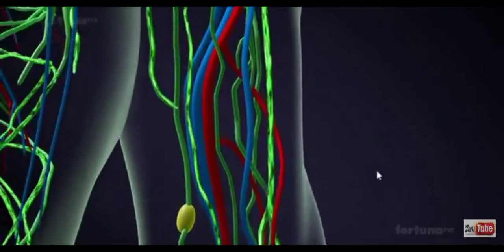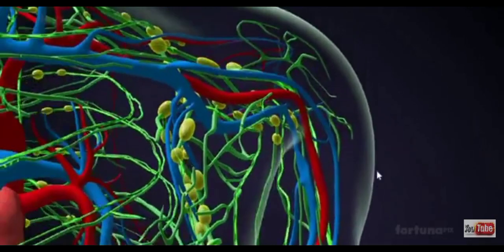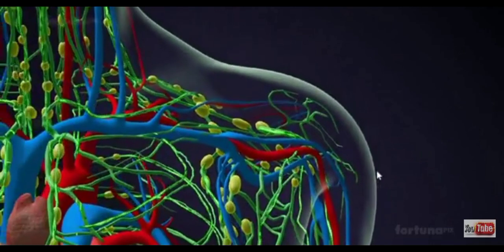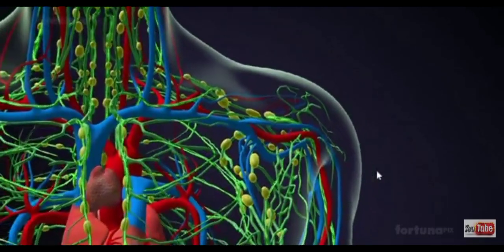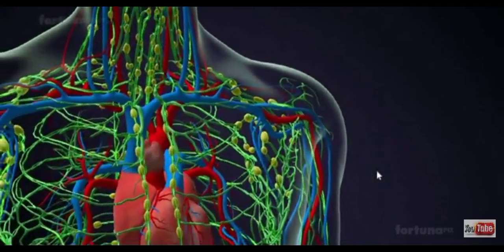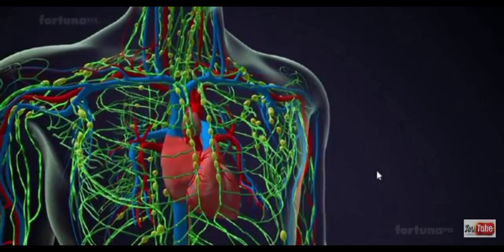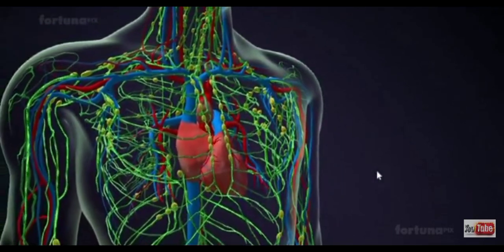Lymphatic capillaries unite to form collecting vessels, which move along the arteries and veins before emptying lymph into one of the many lymph nodes found in the body.